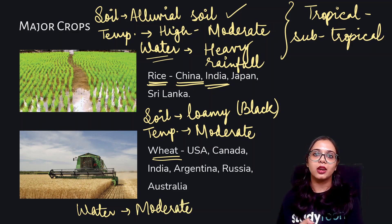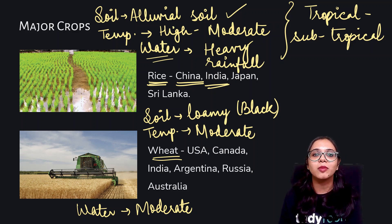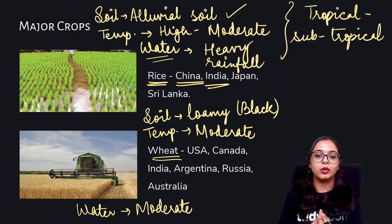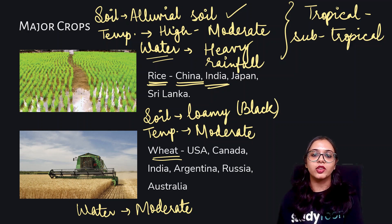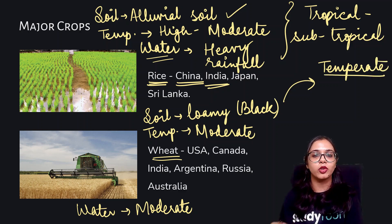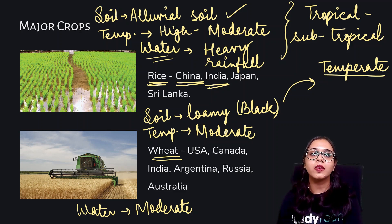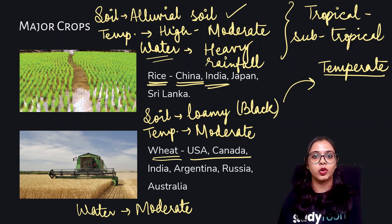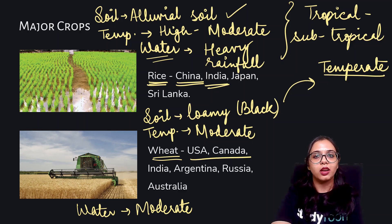One thing to remember is that during the time of harvesting, there should be adequate — in fact, plenty of — sunshine, so that the ripened crops of the wheat plant are good in quality. All of these conditions should remind you of temperate grasslands, because in temperate areas you get moderate rainfall and moderate temperature, and it can be ensured that during harvest, wheat gets enough sunshine. Areas like USA, Canada, India, Argentina, Russia, and Australia grow wheat in huge quantities.